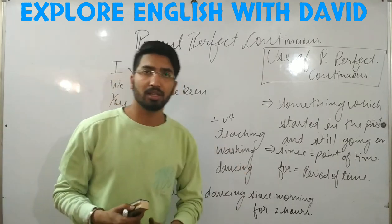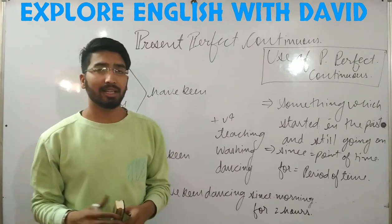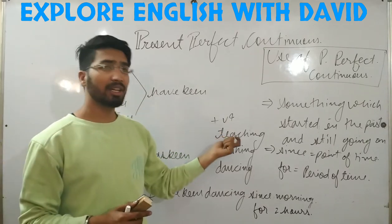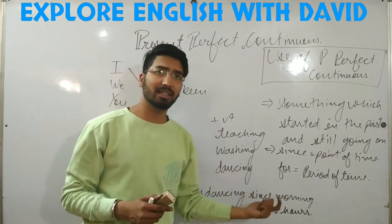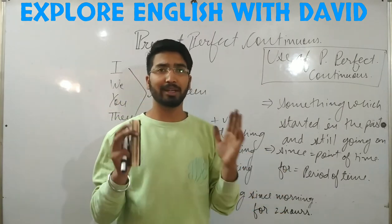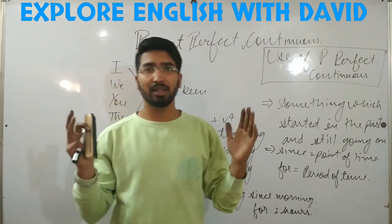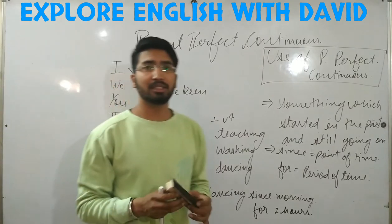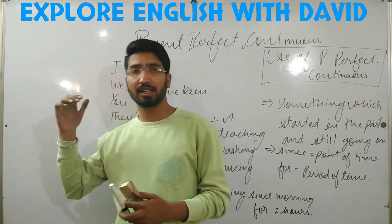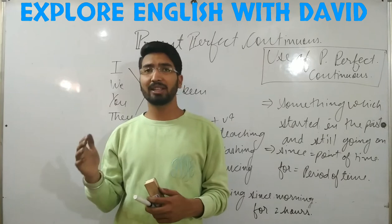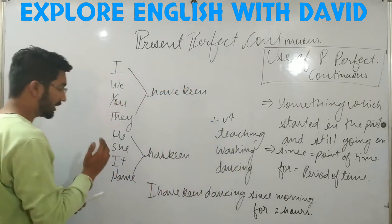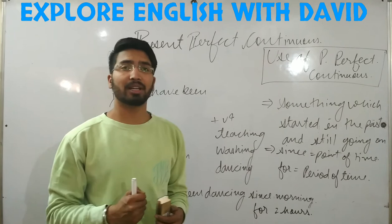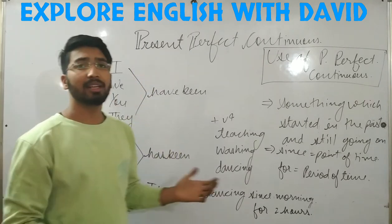More examples: I have been teaching, I have been washing, I have been enjoying, I have been preparing for IAS for 2 years. Here '2 years' describes the duration of time. My father has been reading the newspaper since morning. My sister has been learning English since childhood.